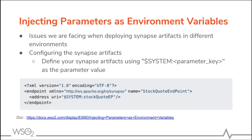Regarding injecting parameters as environment variables: when deploying integration artifacts in different environments, it is necessary to change the Synapse parameters used in the artifacts according to that environment. For example, the value for the endpoint URL given in integration artifacts should be specific for each environment. This feature allows you to deploy the same integration solution to multiple environments and then inject separate parameter values to the different environments. This is particularly useful for container deployments where we need to dynamically inject parameter values.